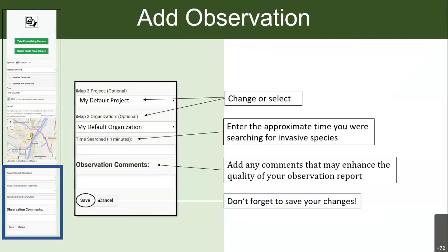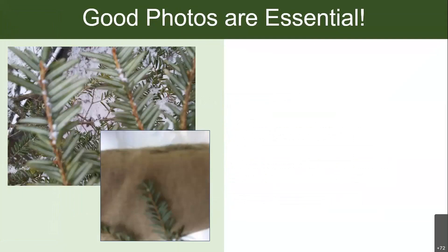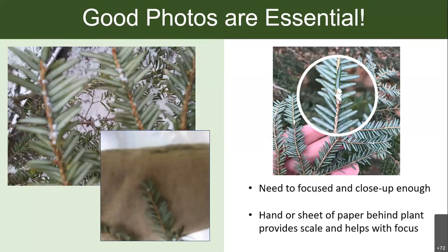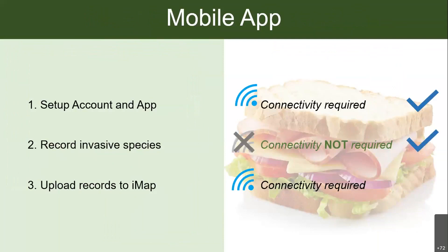There's also an optional field to enter the time you searched for invasive species — if you were just walking down a trail and happened to find one, you can leave this blank. It's really for formal surveys. Add any comments and save your changes. Pictures are very important — good, in-focus photos are essential because this is how our experts confirm data so it can actually be used by New York State. A tip: put your hand or a sheet of paper behind the specimen to help it focus and provide scale.